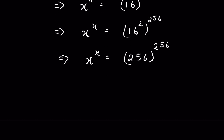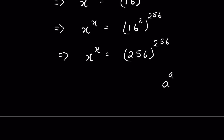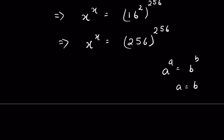Now, this is in the form of a to the power a is equal to b to the power b. That means a is equal to b. So x is equal to 256.